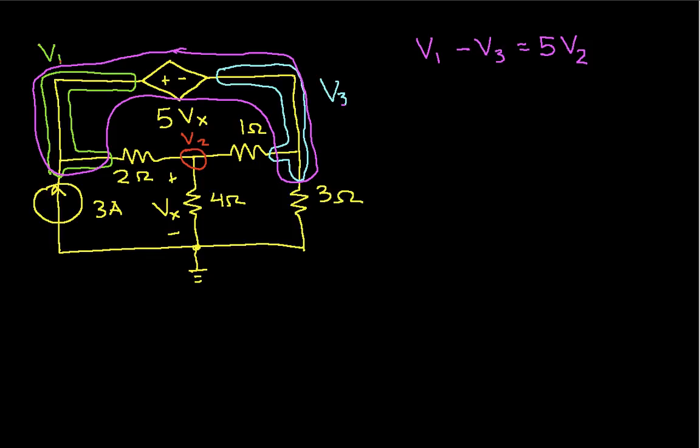So when we do that, we can find then that we have a current through the 2 ohm resistor and that current will be V1 minus V2. That's the voltage across the 2 ohm resistor divided by 2 ohms. So that's basically the current going this way. And then we'd have the current going through the 1 ohm resistor, which will be V3 minus V2 over 1 ohm. So that's the current going this way.